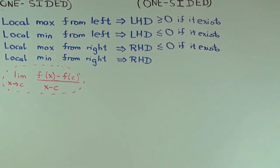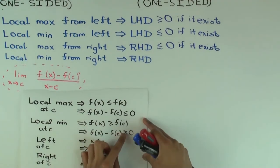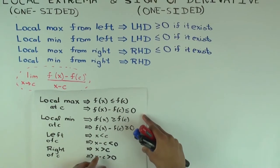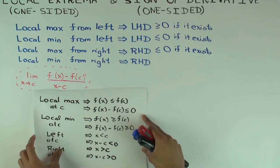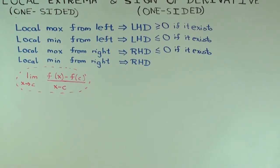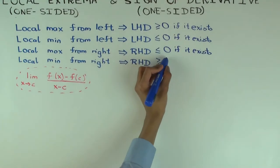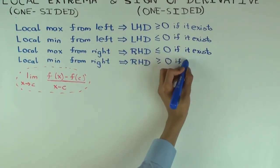Local minimum from the right — by the pattern you can guess it's greater than or equal to zero. Let's verify: the numerator f(x) − f(c) is greater than or equal to zero, and the denominator x − c is greater than zero since x is to the right. The quotient is greater than or equal to zero, and the limit is greater than or equal to zero. So the right-hand derivative (RHD) is greater than or equal to zero if it exists.